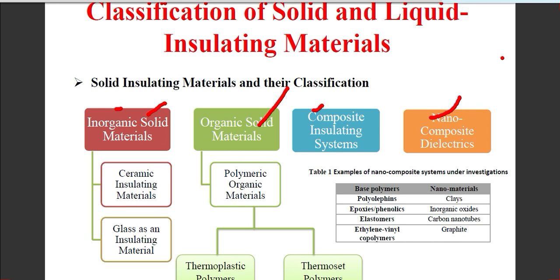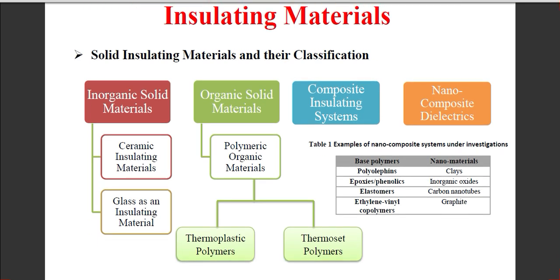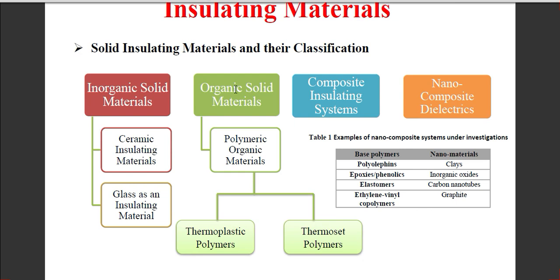In solid insulating materials we have different types. In the organic solid material category, we have polymer organic materials. Within polymer organic materials there are again two types: thermoplastic and thermoset polymers.